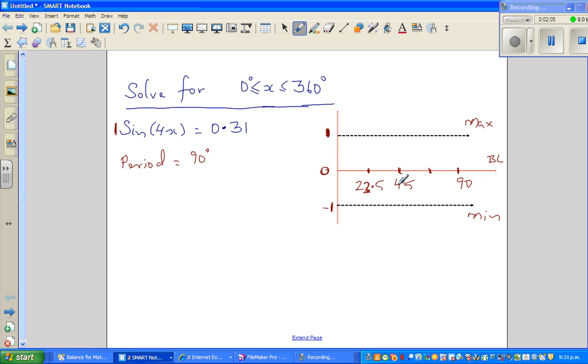So 22.5 is 45, this is 67.5. So let me write it properly, 67.5.